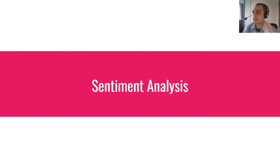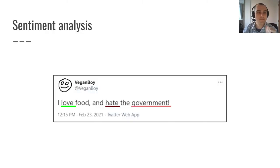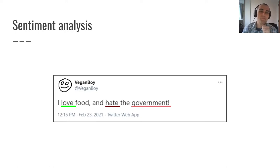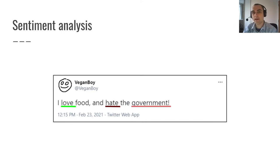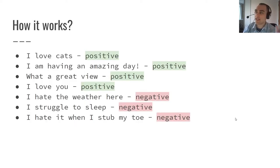I mentioned sentiment analysis, so let's briefly look at that and a naive implementation of it. It's usually easy for us as humans to look at a sentence and determine if it's positive or negative. Looking at an example: 'I love food' — 'love' is clearly positive sentiment attached to the word 'food.' But in the very next breath they can say 'I hate the government' and we know immediately that's negative sentiment associated with the government, not with the food.